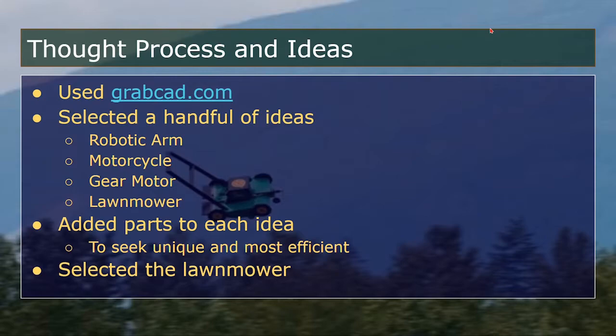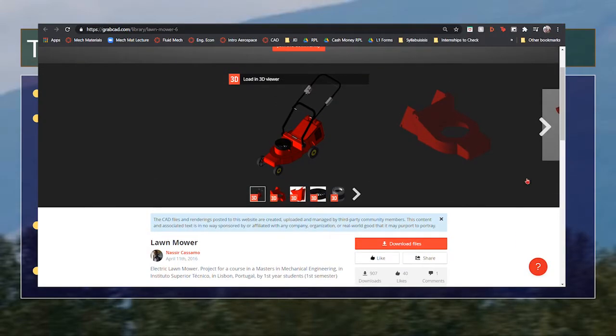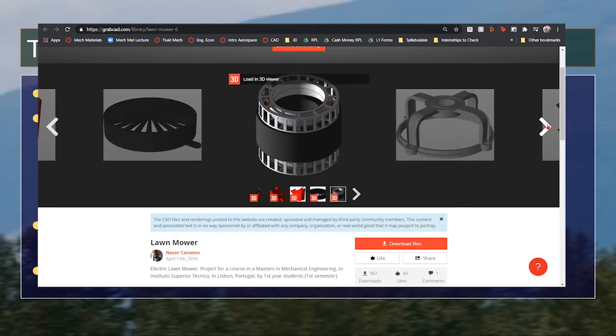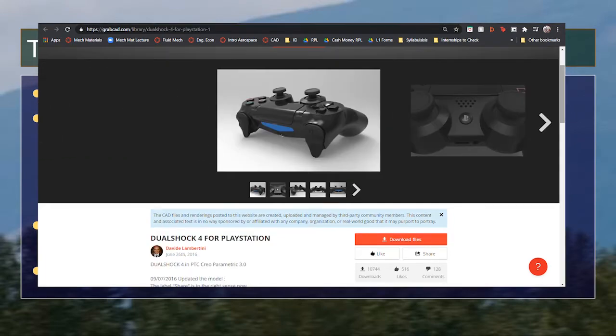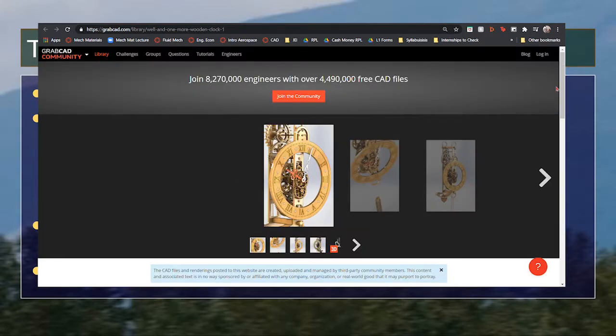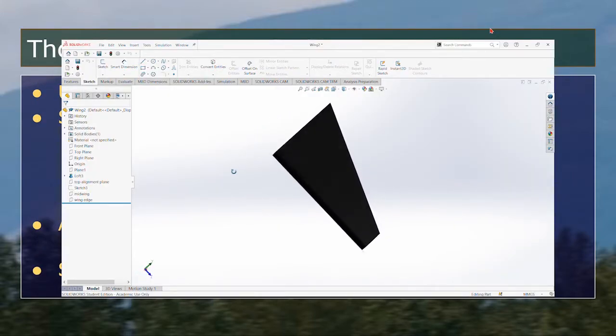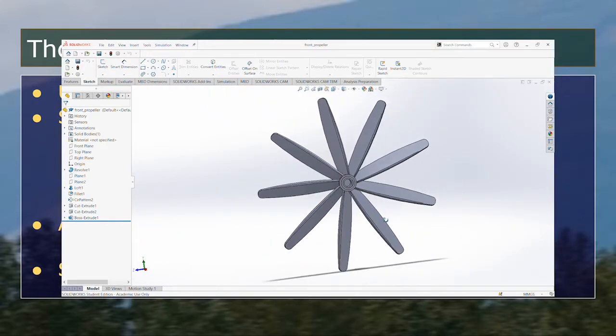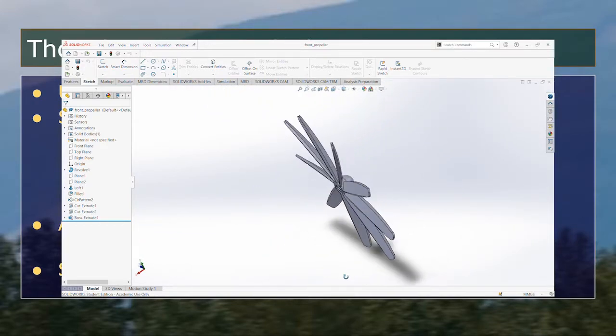In order to come up with the design for the flying lawnmower, we used grabcad.com. We selected a lawnmower that we felt was detailed enough. And we also selected a handful of ideas before that. Some of these ideas were a robotic arm, a motorcycle, a gear motor, and a lawnmower. But ultimately, we went with the lawnmower in the end. We felt that adding wings and propeller would be really fun to do. And we also figured that this would provide us a creative opportunity to think of our own designs.